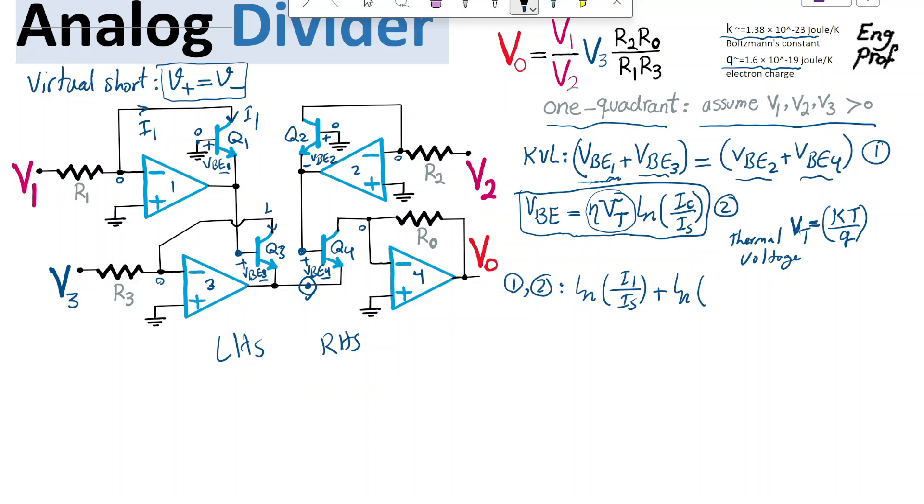which is I3, this current. So it's going to be I3 divided by saturation current equal to,